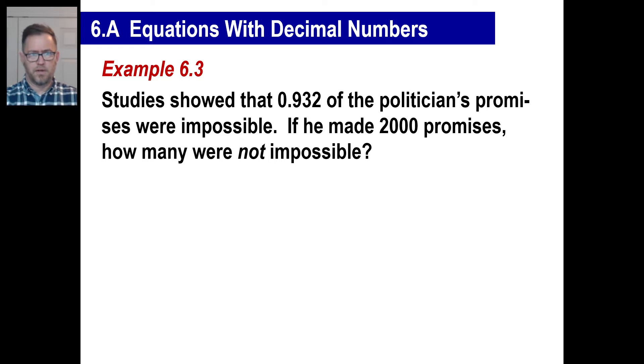Well, look at this. There's another one. It's a very practical one, too. So pause and copy if you want to. Studies showed that 0.932 of the politicians' promises were impossible. Boy, how does, like, Saxon Math keep up with the times all the time? Anyway, you should recognize that's like 93.2%, right? 0.932 were impossible. If you made 2,000 promises, how many were not impossible? Uh-oh. Let's kind of circle that. I always do that.